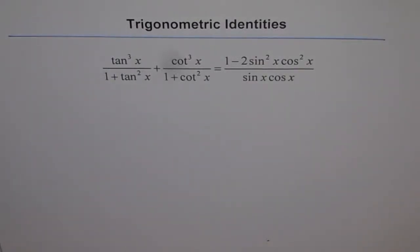We are proving the trigonometric identity: tan³x divided by (1 + tan²x) plus cot³x divided by (1 + cot²x) equals (1 minus 2sin²x cos²x) divided by (sin x cos x).